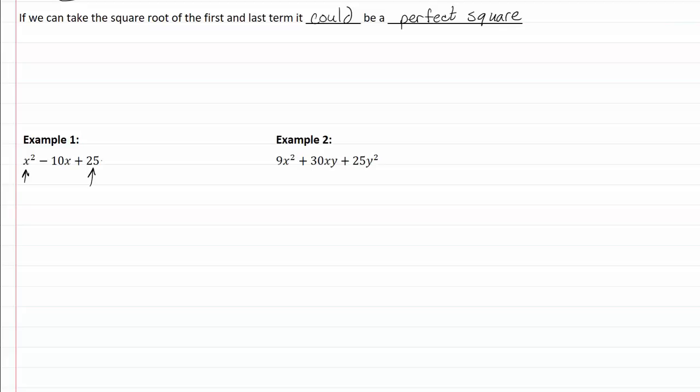So then it's a good chance that I got a perfect square. So all we have to do is check the middle term. Is the middle term two times our square root of our first term times the square root of our last term?